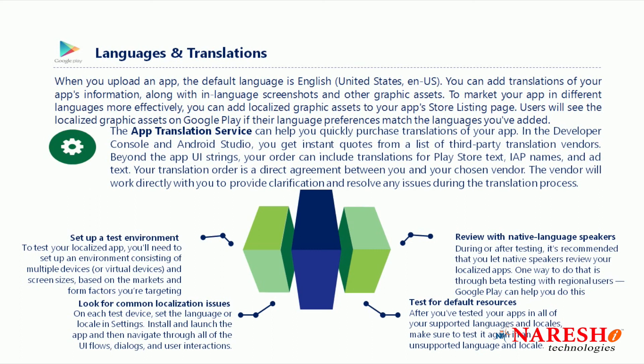When you target a number of countries, you need to upload the application with support for all the languages you are targeting. You can do the translations locally in your application, or you can use the Google translation service, which is a proprietary service requiring payment — this is called localization.